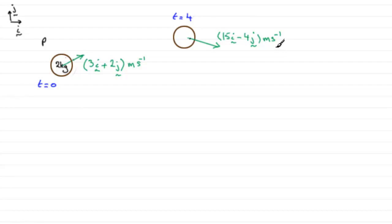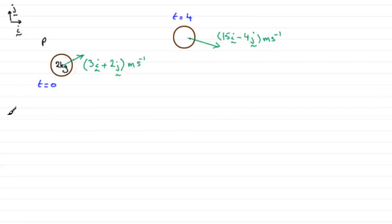In the first part we've got to find the acceleration of P in terms of i and j. I've set up my i and j unit vectors here — i being horizontal, j being vertical. In the first part we've got to work out that acceleration a, and we should know that acceleration equals the change in velocity: that's the final velocity minus the initial velocity, divided by the time taken.